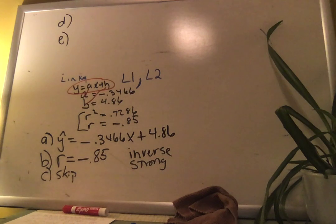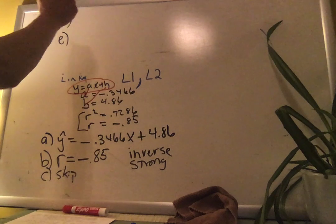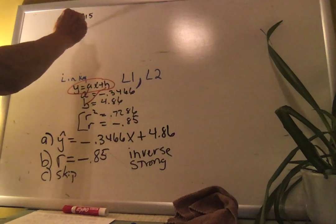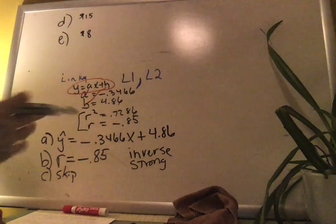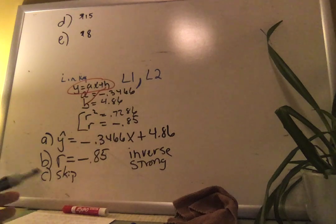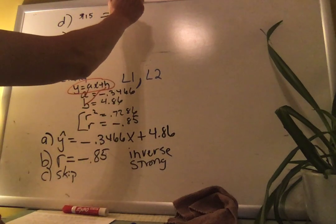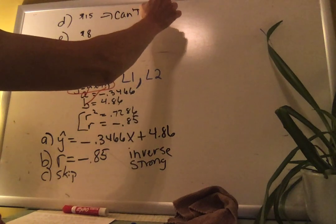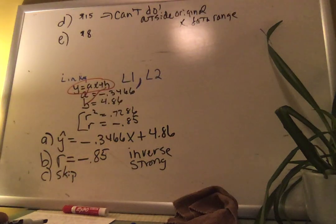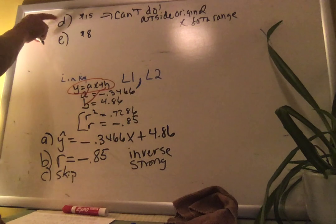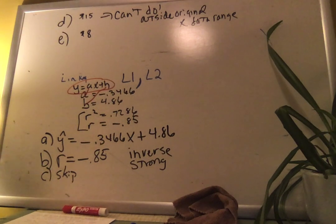Parts D and E look similar — it seems like why ask you to do nearly the same thing twice with different numbers. It asks you to predict at 15 and at 8. Remember, we can only predict inside the original X data range. This data set runs roughly between six and thirteen dollars, so you cannot do the prediction at 15. Just write: can't predict outside the original X data range, because the trend probably doesn't continue at that wage level.